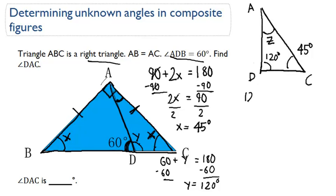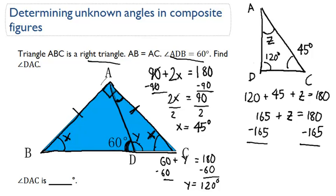So we know that 120 plus 45 plus Z equals 180. If we simplify, we get 165 plus Z equals 180, and now all we have to do is subtract both sides by 165 to solve for Z. These go away, and I am left with Z equaling 15 degrees.